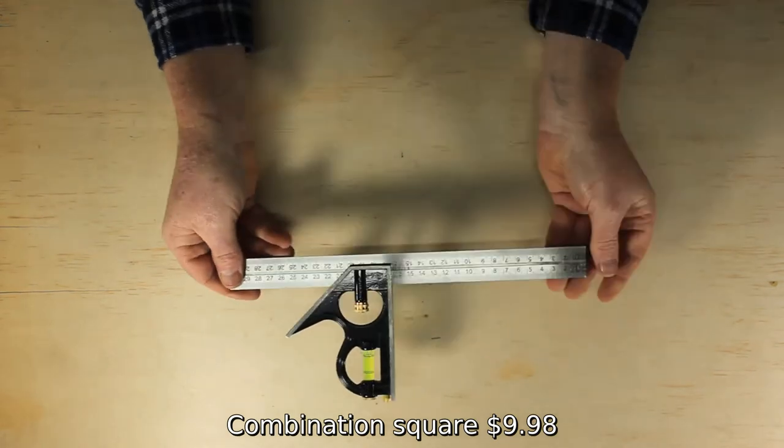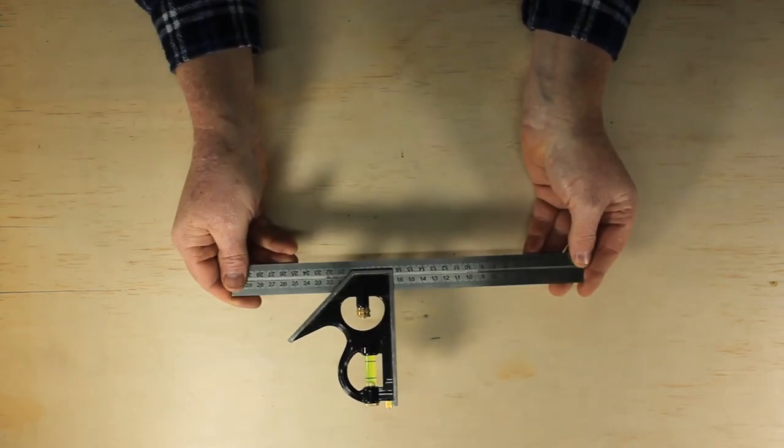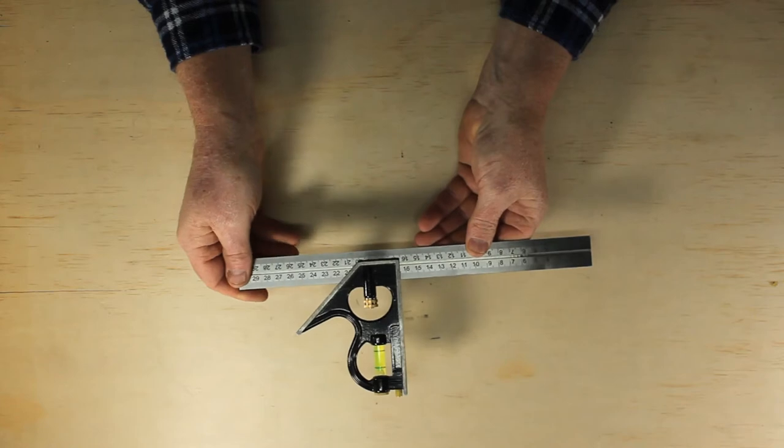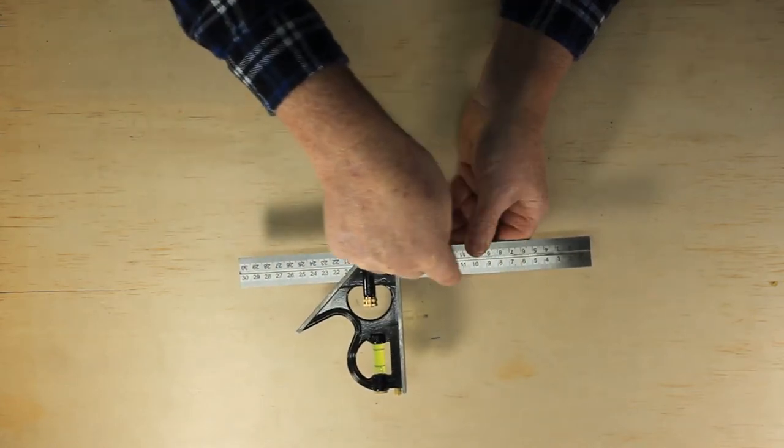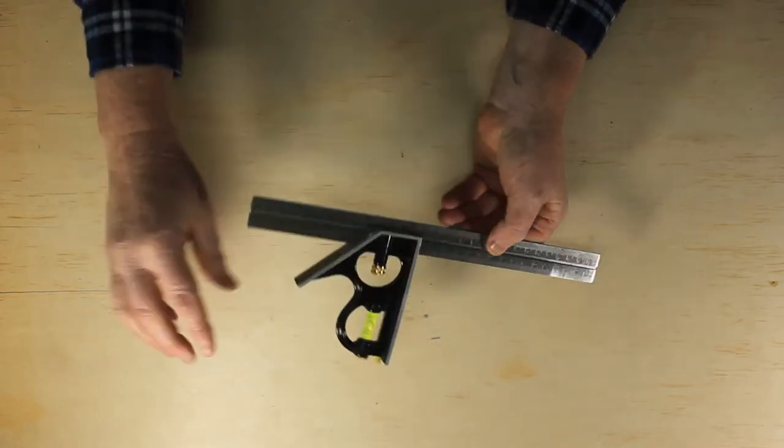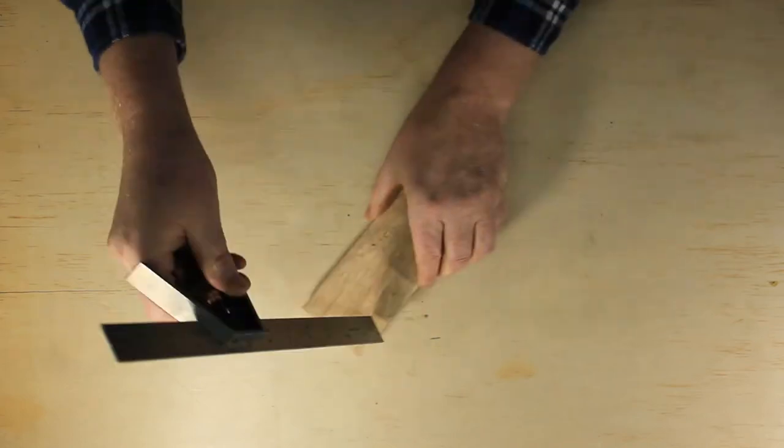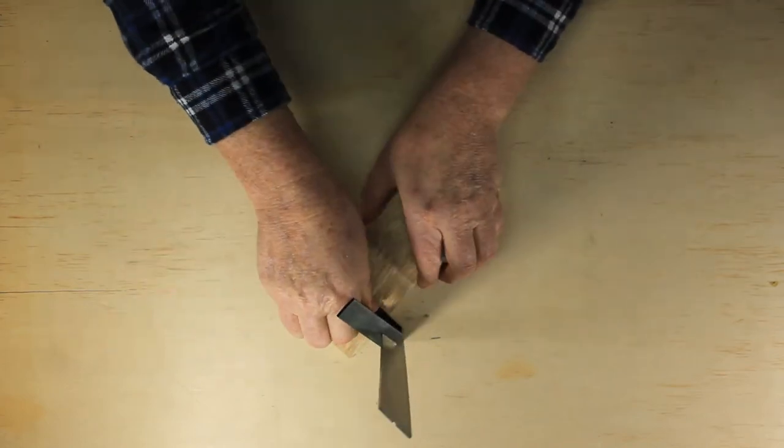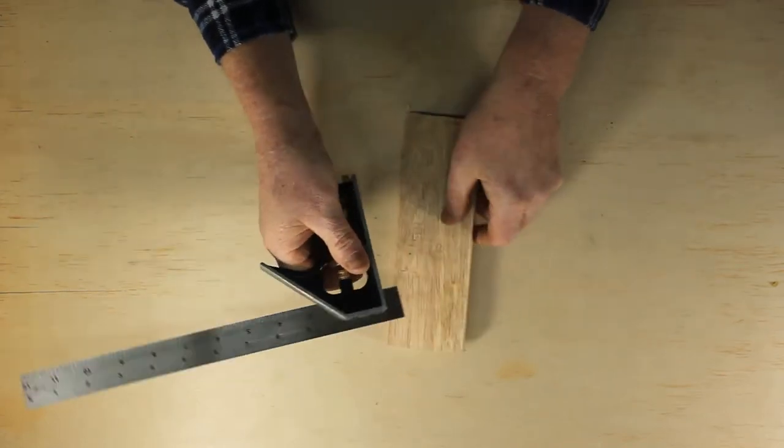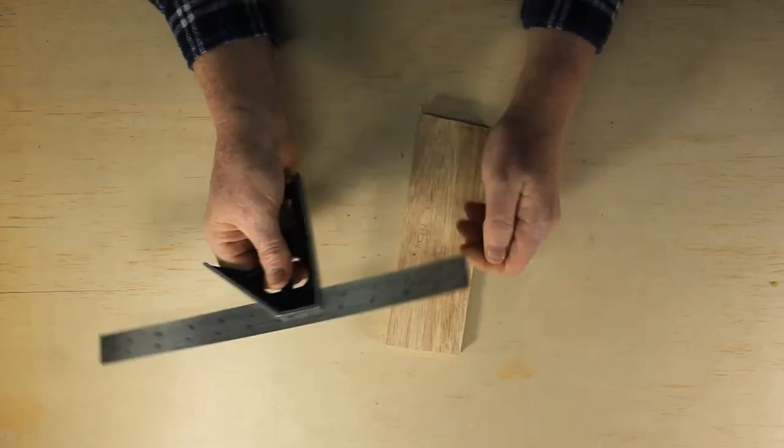For most woodworking projects the combination square will rarely leave your hand, it's a really versatile tool. It lets you measure 90 degree angles, 45 degree angles, thicknesses of boards, and of course checking for squareness.